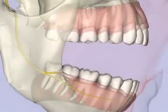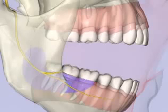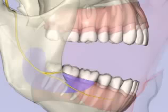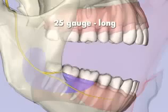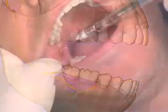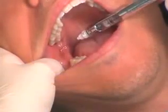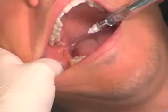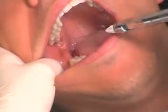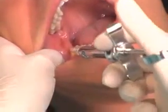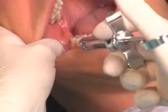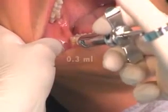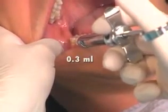The buccal nerve block provides anesthesia to the soft tissue and periosteum on the buccal aspect of the mandibular molars. The injection is given immediately following the inferior alveolar nerve block; a 25-gauge long needle is recommended. The needle is withdrawn, the syringe repositioned, and the needle reinserted in the mucobuccal fold distal to the last mandibular molar. 0.3 mLs of anesthetic is administered.